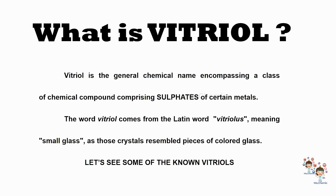What is vitriol? Vitriol is the general chemical name encompassing a class of chemical compounds comprising sulfates of certain metals. The word vitriol comes from the Latin word vitriolus, meaning small glass, as those crystals resemble pieces of colored glass.